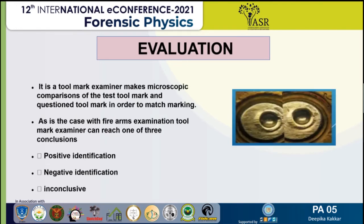A toolmark examiner makes microscopic comparisons of the test toolmark with the questioned toolmark in order to match markings. As with firearm examination, the examiner can reach one of three conclusions: first, positive identification; second, negative identification; or third, inconclusive — where it cannot be determined whether the mark belongs to the tool or not.